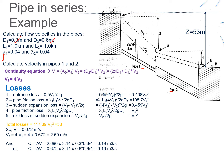We apply the continuity equation to establish a relationship between velocity 1 and velocity 2. The continuity equation states that the amount of mass entering the system equals that exiting, and under steady-state flow the discharge in pipe 1 at any point equals the discharge in pipe 2 at any other point. So we equate Q1 equals Q2.